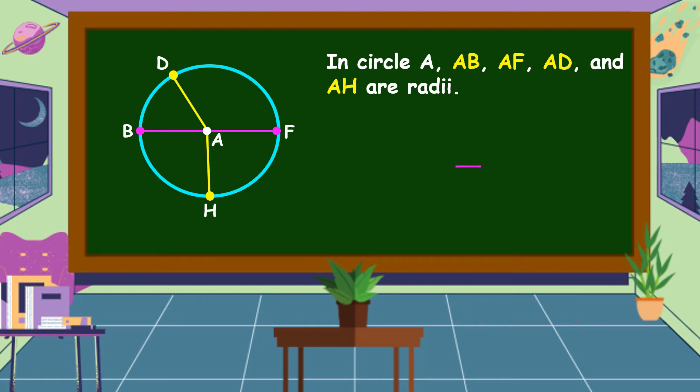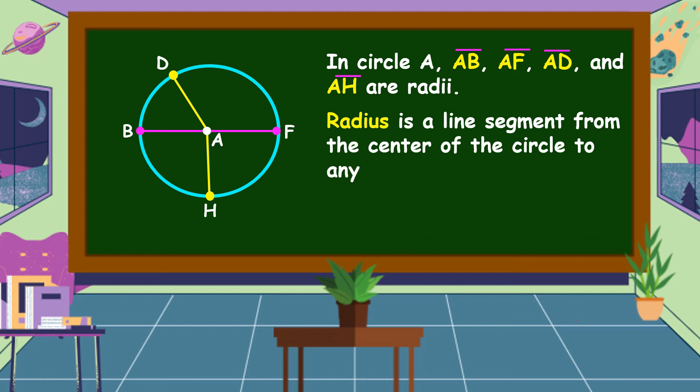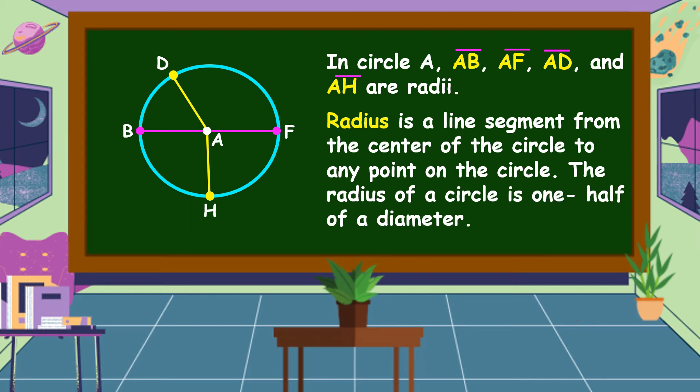In circle A, line segment AB, line segment AF, line segment AD and line segment AH are radii. Radii is the plural form of radius. What is a radius? Radius is a line segment from the center of the circle to any point on the circle. The radius of a circle is one half of a diameter.